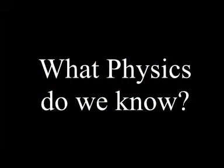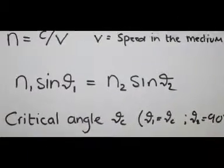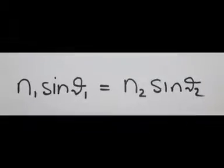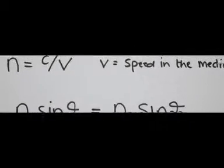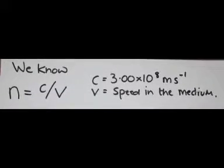What physics do we know? We know Snell's law: N1 sin theta1 equals N2 sin theta2, where N, the refractive index, is defined as the ratio of the speed of light in a vacuum to that in the material.